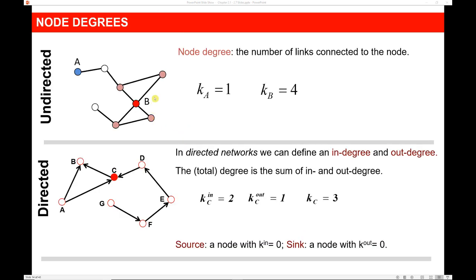Here on the left we have an undirected graph and on the right a directed graph. In the undirected graph, you can see there are no arrows, so the connection between nodes is the same from one node to the other and vice versa. The degree in an undirected graph is simply the number of links connected to the node. So the degree of node A is one and the degree of node B is four — you can count all of the edges coming out of that node. In a directed network, it's slightly different. You can see that this network does have direction, so A points to B but B does not point to A.